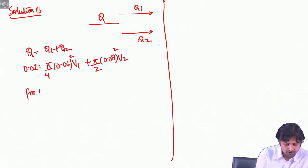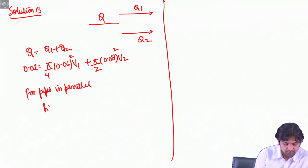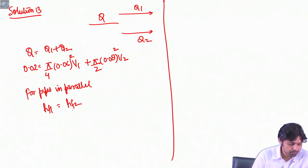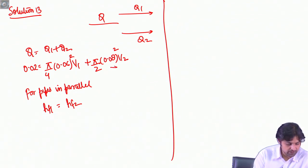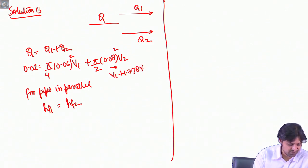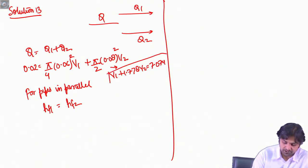For pipes in parallel, head losses must be equal in both pipes. This can be written as V1 + 1.778·V2 = 7.0, which is the first equation relating V1 and V2.